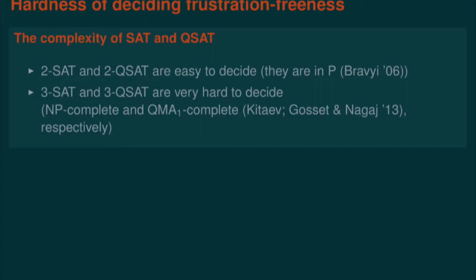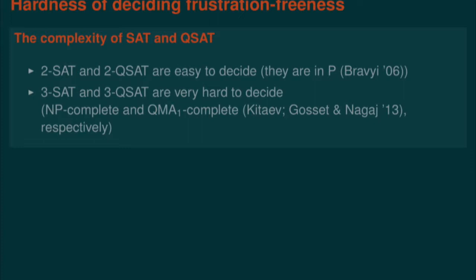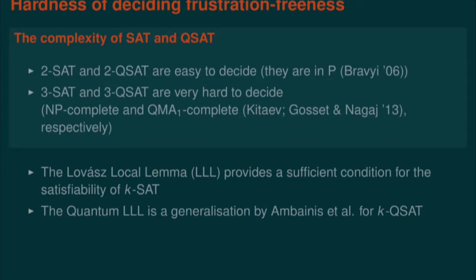How hard is it to decide frustration-freeness? Similarly to the classical case, 2-SAT and 2-QSAT are actually quite easy — solvable in classical polynomial time, which was shown for the quantum case by Bravyi in 2006. There is a very sharp transition because 3-SAT is NP-complete, and similarly 3-QSAT is QMA1-complete, which is work of Kitaev followed by Gosset and Nagaj. So it is very hard to decide whether my Hamiltonian is frustration-free, let alone preparing such a state. But there is a sufficient condition known as the Lovász local lemma, which in the classical case guarantees satisfiability, and it was generalized to the quantum setting by Ambainis et al., translating to a sufficient condition for k-QSAT to be frustration-free.